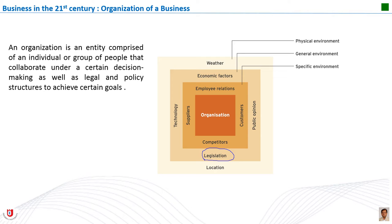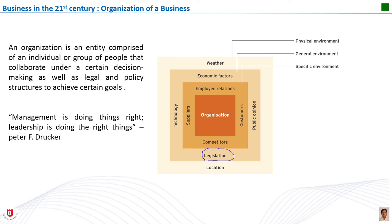Other types of organizational structures not based on business functions are used by some businesses — for example, some businesses organize employees by product line or by geographic area. The effectiveness of a business organization often relates to the ability of leaders to get all departments and employees to work together toward company objectives. Efficient and effective management does the right thing faster, better, and smarter in the right context.